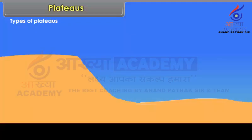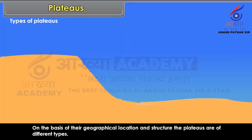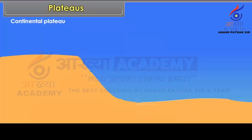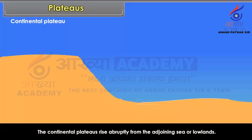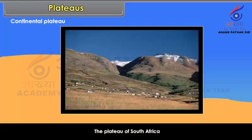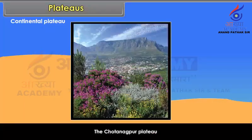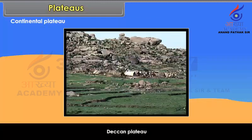Types of Plateaus. On the basis of their geographical location and structure, the plateaus are of different types: Continental Plateau, Intermontane Plateau, and Piedmont Plateau. Continental Plateaus rise abruptly from the adjoining sea or lowlands. The Plateaus of South Africa, West Australia, Chota Nagpur Plateau, and the Deccan Plateau are examples of this type.